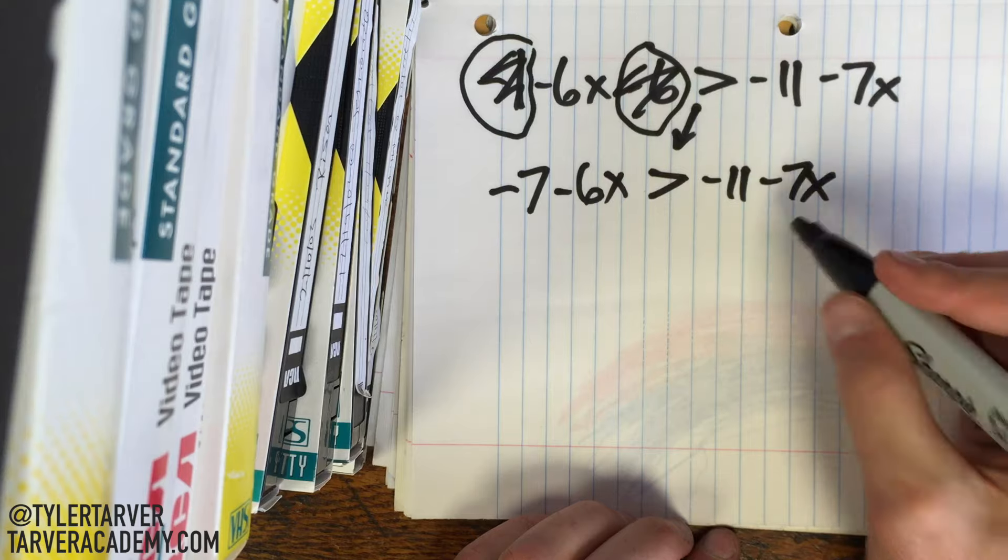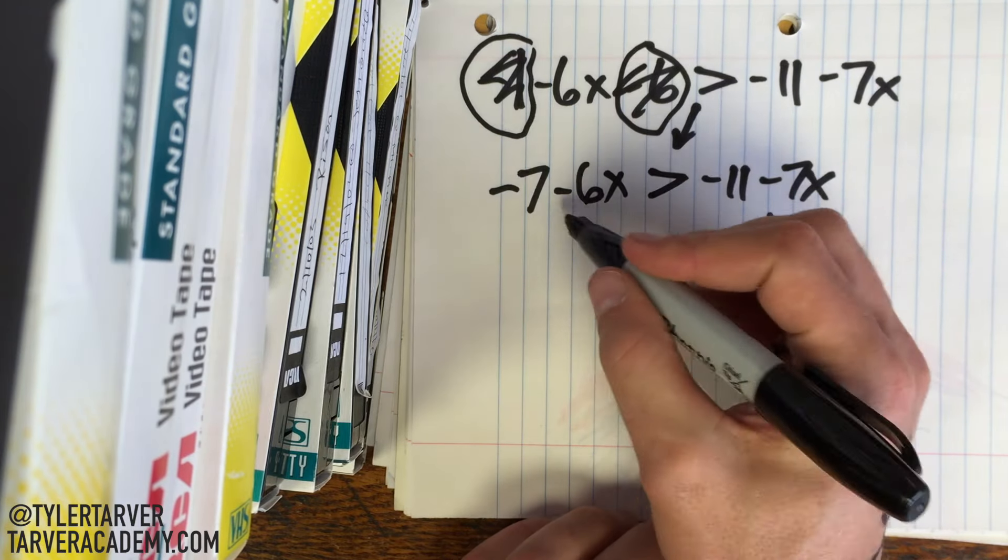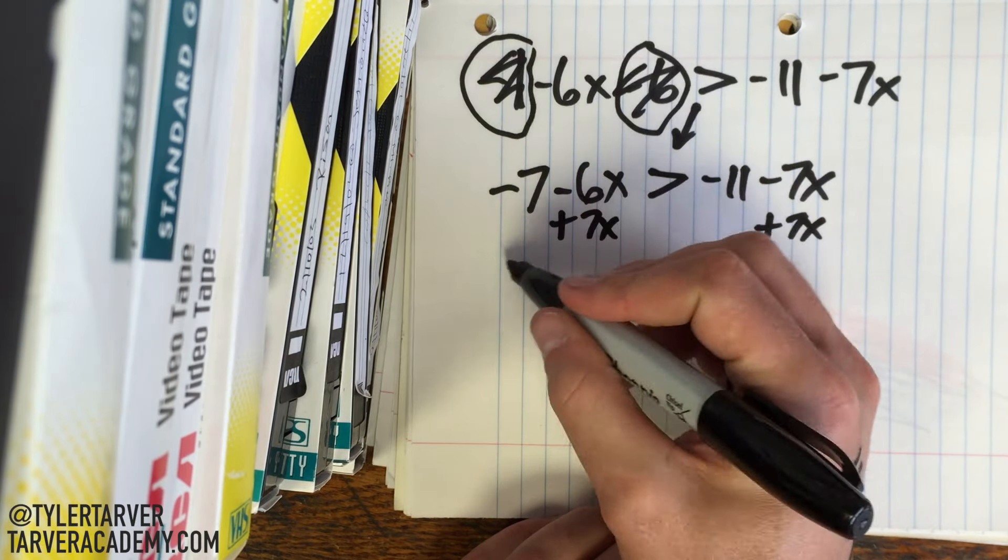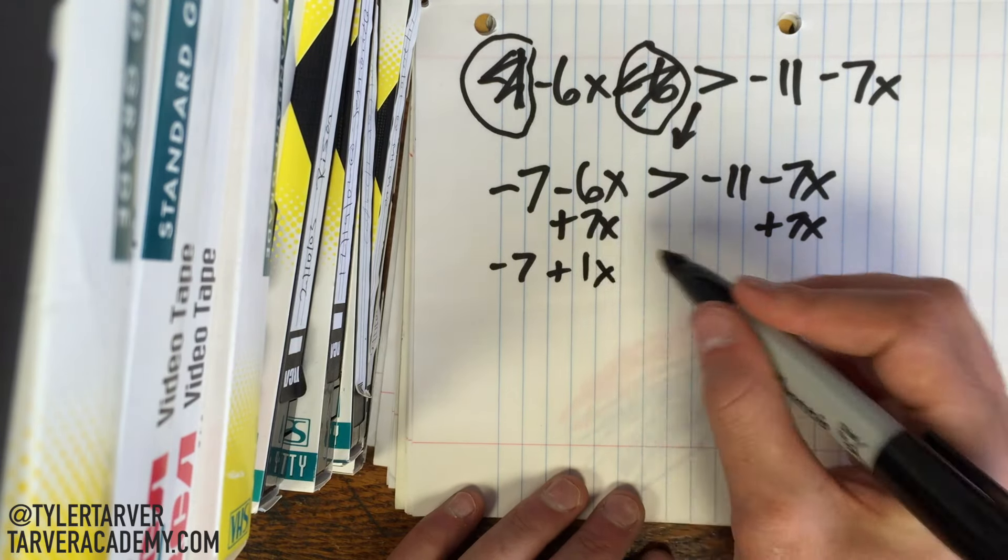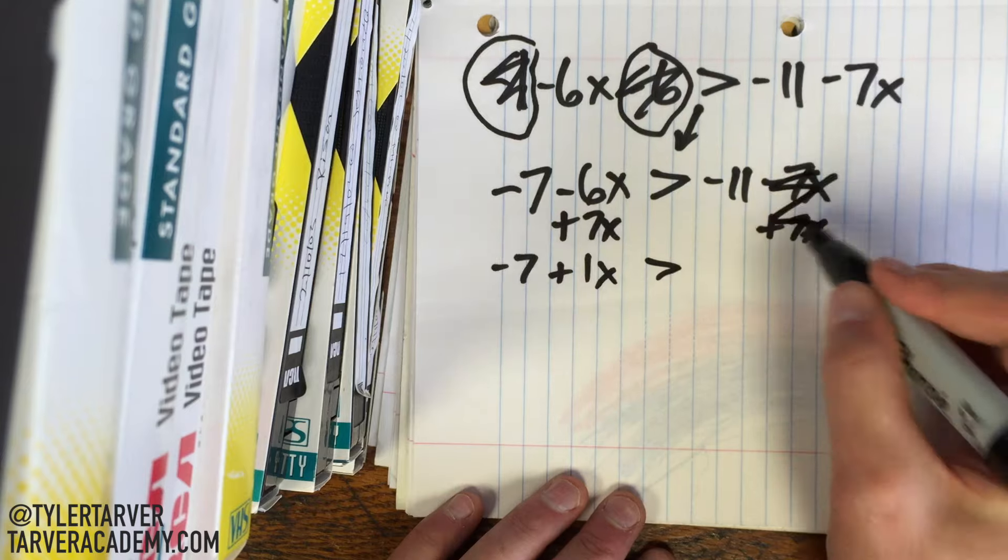So all I would do is the opposite of minus 7x. So I would add 7x. This would come down. Negative 6 plus 7 is positive 1x, which we know that 1's not necessary anymore. That cancels out.